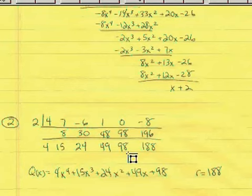Add 0 plus 98 to get 98, 2 times 98 is 196, negative 8 plus 196 is 188. So the remainder is 188 and these are the coefficients of the quotient, 4x to the 4th plus 15x to the 3rd plus 24x squared plus 49x plus 98.